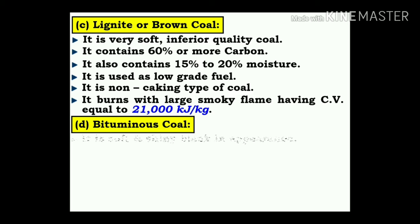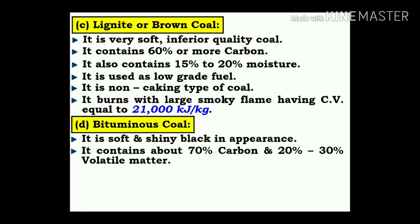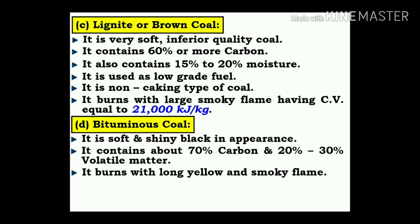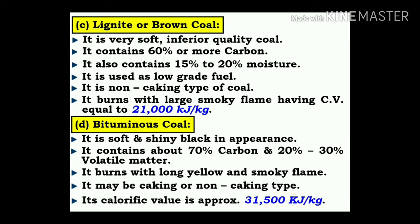Bituminous coal: it is soft and shiny, black in appearance. It contains about 70% carbon and 20 to 30% volatile matter. It burns with a long yellow and smoky flame. It may be caking or non-caking type. Its calorific value is approximately 31,500 kJ/kg.